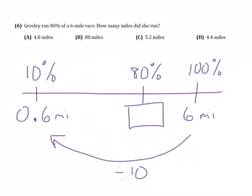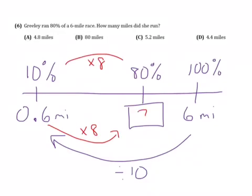But we ran 80%. To find 80%, we need to multiply by 8. So we multiply 0.6 by 8, and that will show how much Greeley ran.